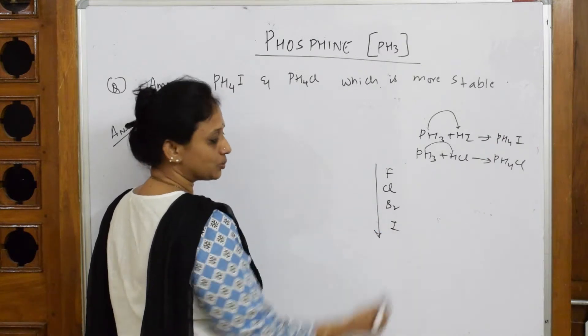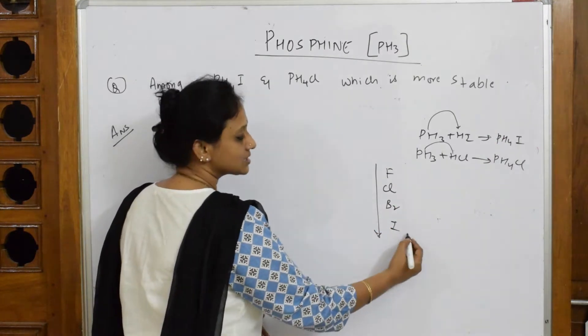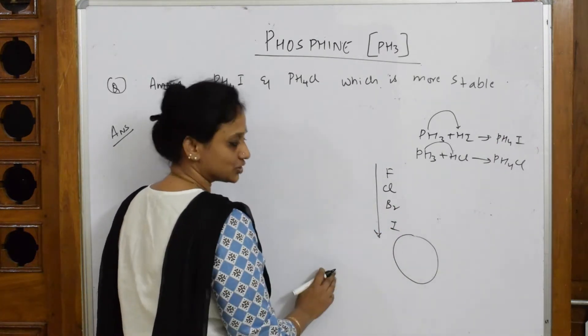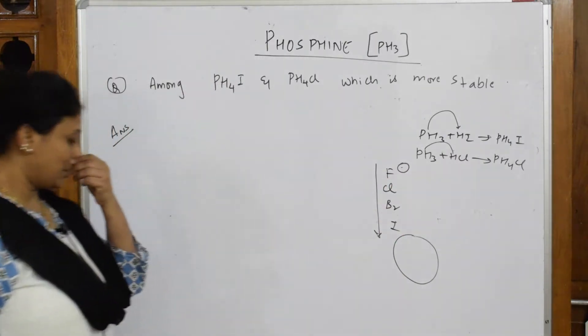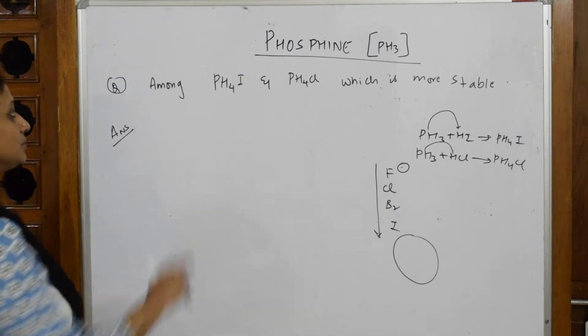When I go down the halogen group, which has bigger atomic size? The atomic size of iodine is larger. Fluorine - the atomic size is small. When I have to see the ions, how do these two compare?